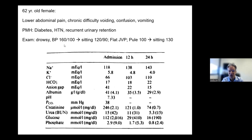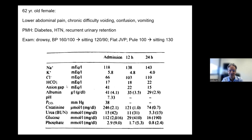On exam, she was drowsy with a blood pressure of 160 over 100. Blood pressure fell when she stood up. JVP was flat. Her pulse was 100 sitting and went to 130 standing. This is actually a figure from a paper, and it's a little confusing, but hopefully you can read it.